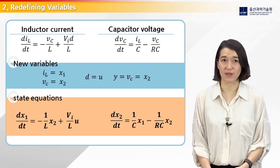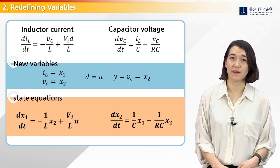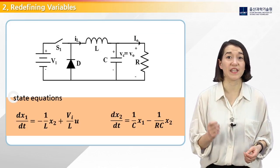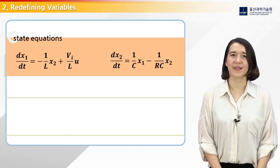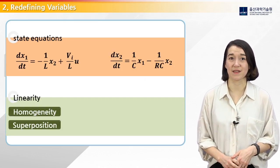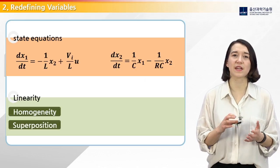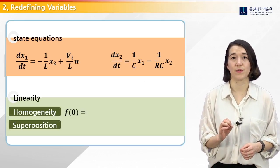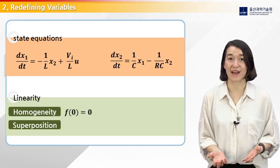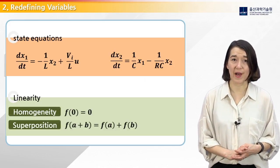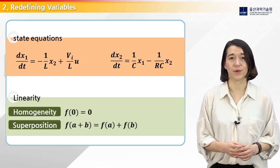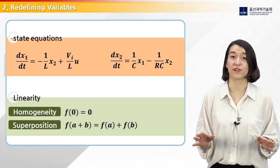Next, we take our system equations and linearize them if needed. However, from these state equations, we can see that these equations are already linear. Here are the two requirements for linearity: homogeneity and superposition. You can see directly that if you make the state equations and input zero, the function output for both functions will be zero, so homogeneity is satisfied. If you go through and do the math, you will see that these equations also satisfy superposition. So the system is already linear and there is no need for linearization.